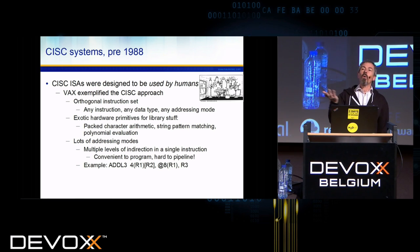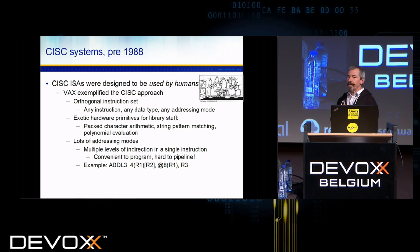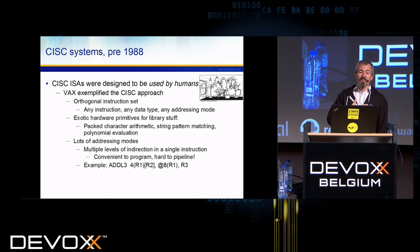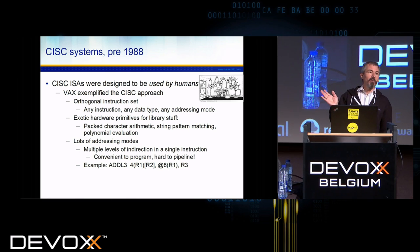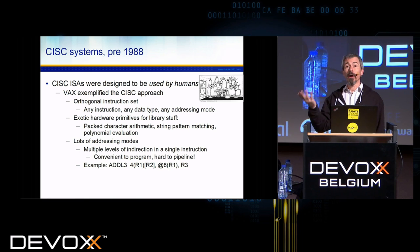In 1988, people were using CISC ISAs because they were meant to be written by humans. People were still writing programs in assembly, and compilers were a newfangled thing you might experiment with. The CISC approach dated from 10–20 years earlier when the expectation was you'd write in assembly. You had exotic hardware primitives — things like string pattern matching or polynomial evaluation were actual machine hardware instructions. Multiple levels of memory indirection per instruction made it mentally easy to program but very hard to make the hardware go faster.